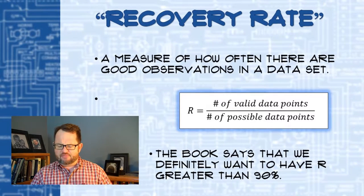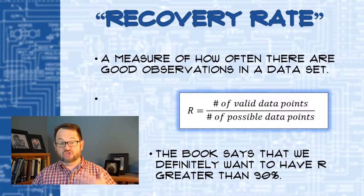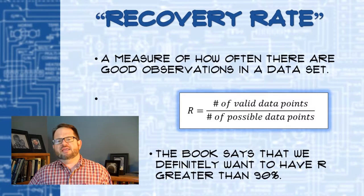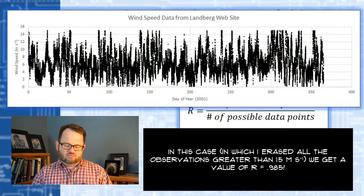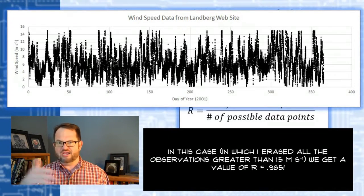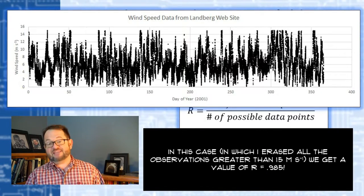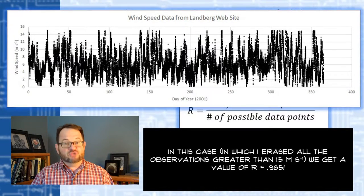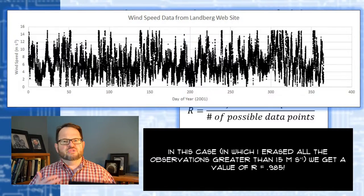What's a good recovery rate? Your book says you definitely want at least 90%. But I'd say the recovery rate threshold is a little bit screwy — you also have to know how random the missing data are. Going back to the example where I deliberately erased all values greater than 15 m/s, simulating an anemometer going offline if too windy: that's a serious problem, definitely a major red flag for computing averages and standard deviations. In that case, the value of R actually came out to 0.985 — which looks like a very good recovery rate — but because the missing observations are non-random, it's actually a problem.